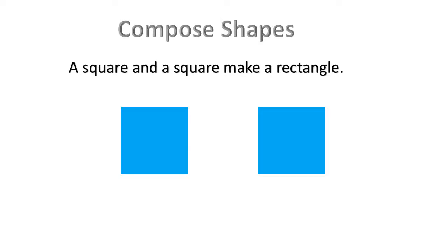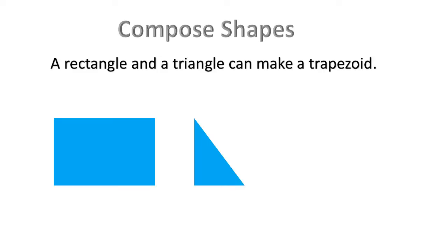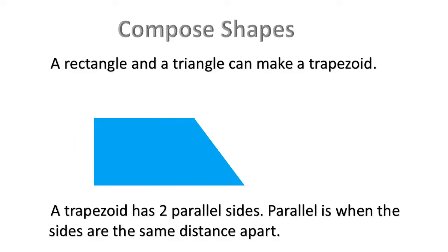Compose shapes. A square and a square make a rectangle. A rectangle and a triangle can make a trapezoid. A trapezoid has two parallel sides. Parallel is when the sides are the same distance apart.